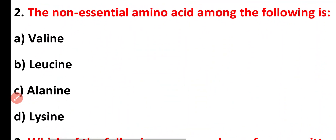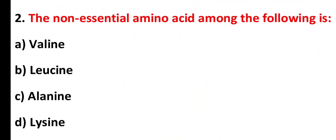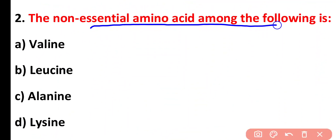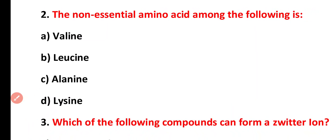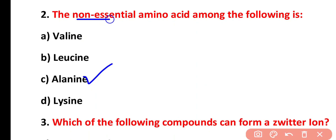Question two: the non-essential amino acid among the following is valine, leucine, alanine, or lysine. The correct answer is option C. Alanine is a non-essential amino acid, whereas valine, leucine, and lysine are essential amino acids.